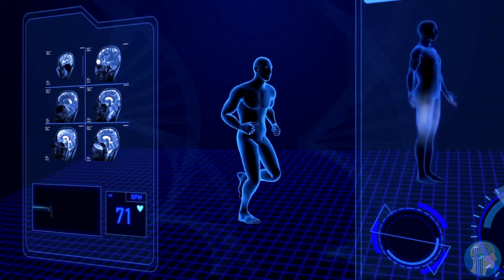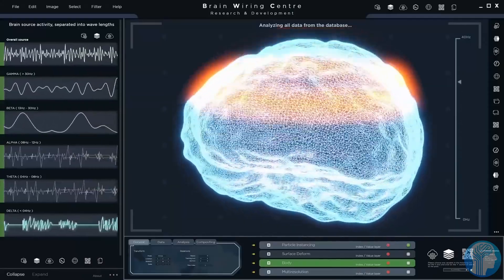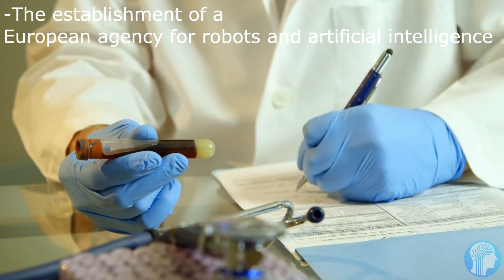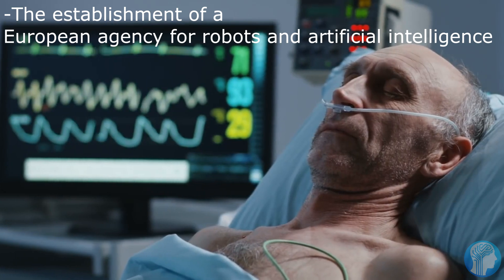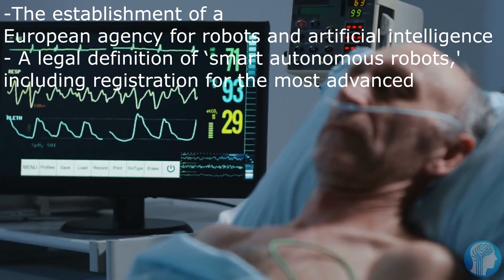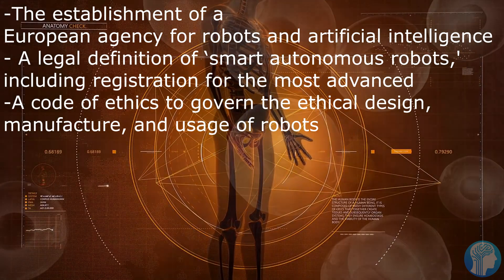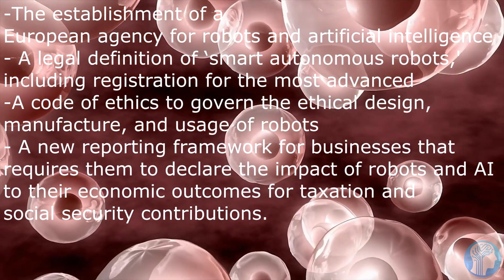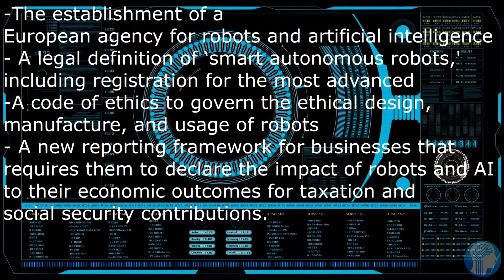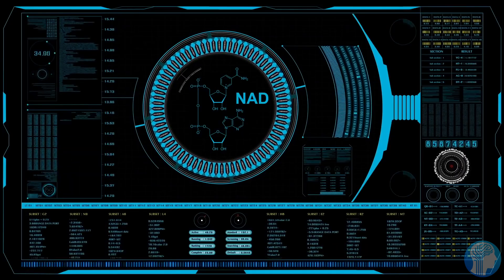The European Parliament has called for the introduction of a set of rules to control the usage and development of robotics and artificial intelligence. It is proposed that the following issues be addressed: the establishment of a European Agency for Robots and Artificial Intelligence, a legal definition of smart autonomous robots, including registration for the most advanced, a code of ethics to govern the ethical design, manufacture, and usage of robots, a new reporting framework for businesses, and an insurance program required for businesses to cover harm caused by their robots.